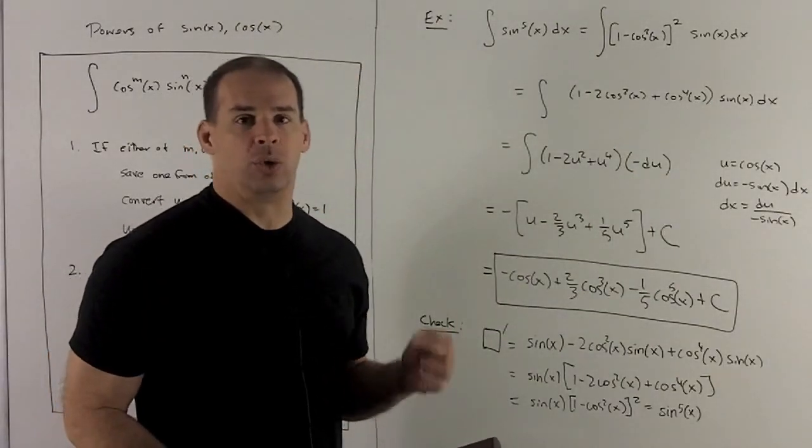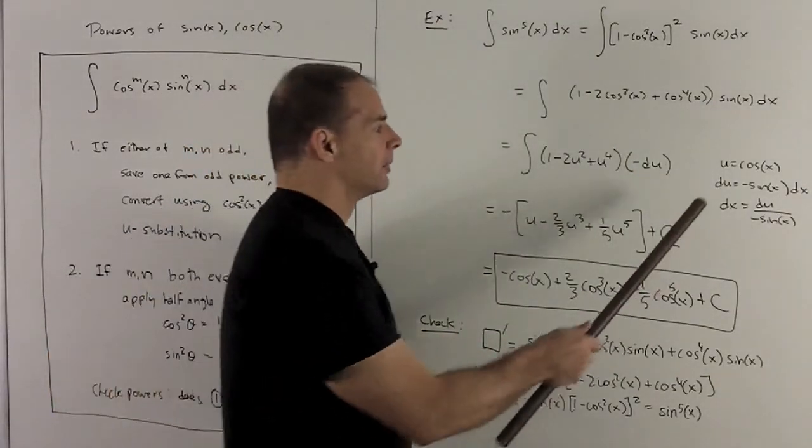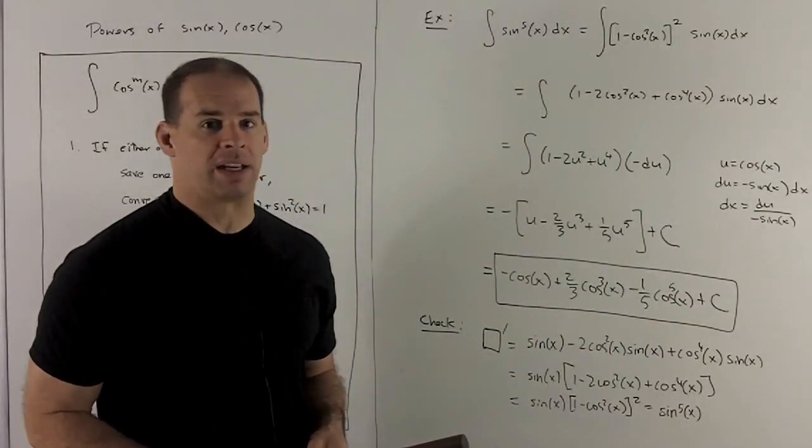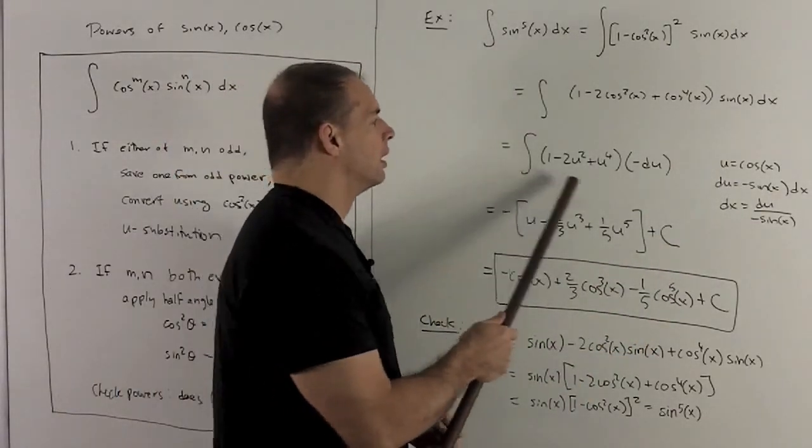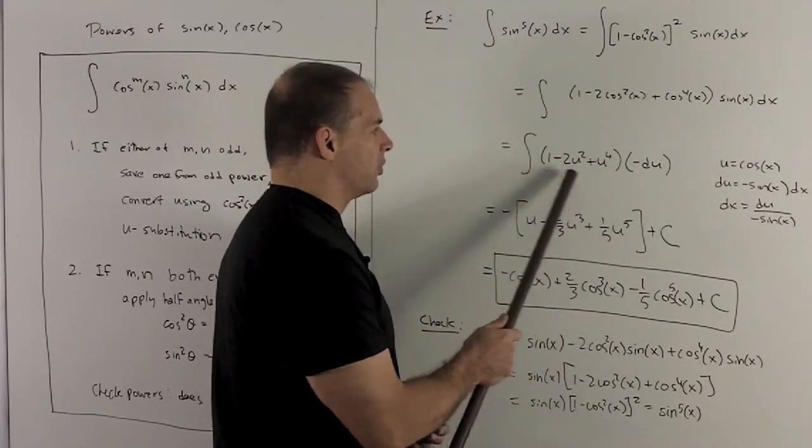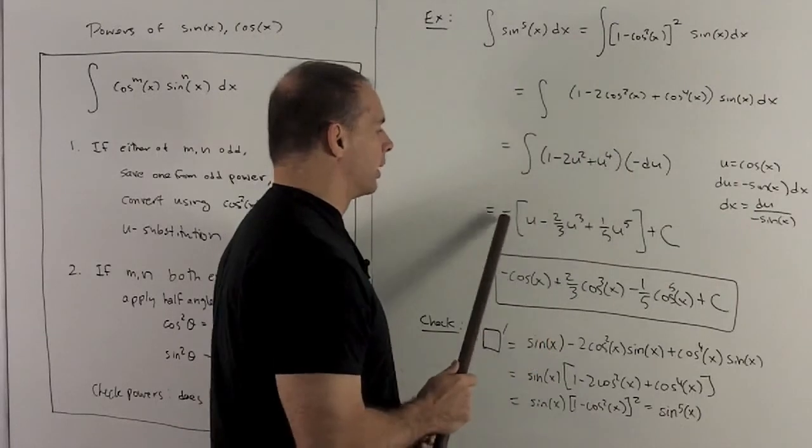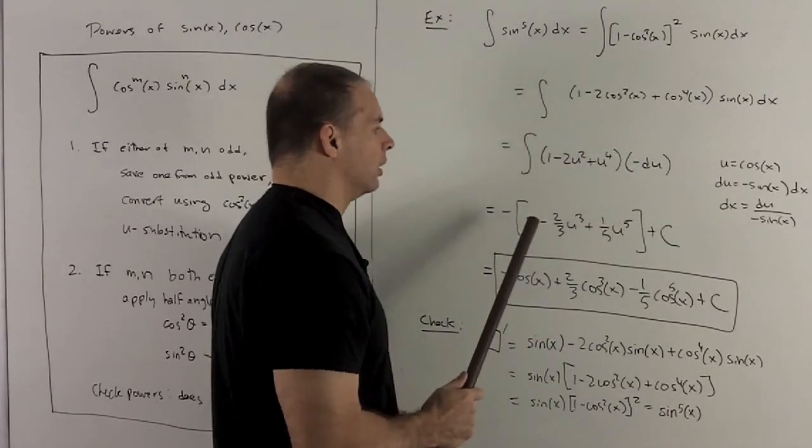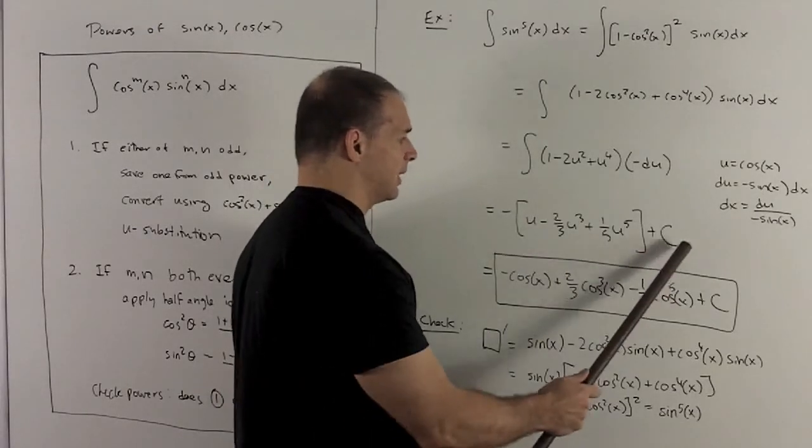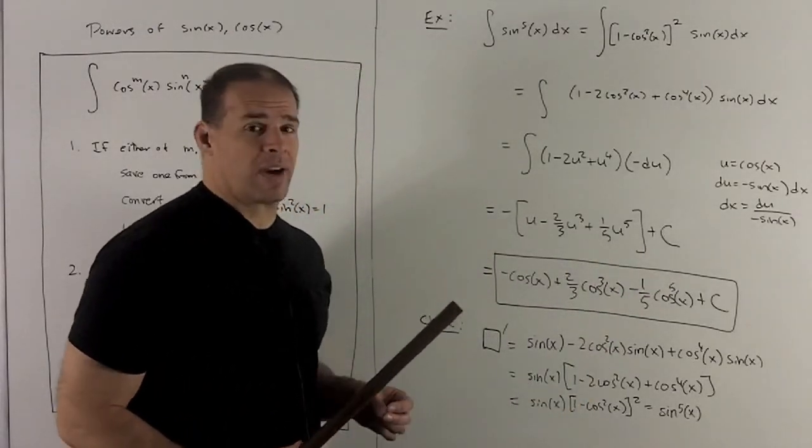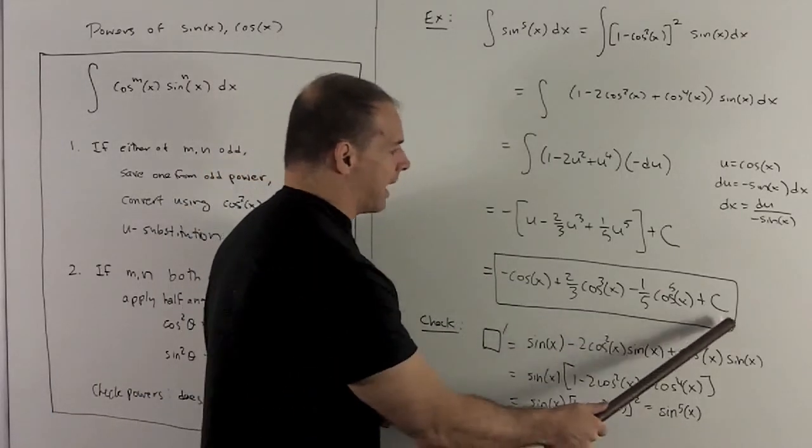So now what we want to do is let u be equal to cosine x. du is minus sine x dx, or dx equals du over minus sine x. Now I have an expression entirely in terms of u, so I can take the antiderivative of this. Minus sine I'll bring out in front. We add 1 and flip it over, and the 1 goes to a u. This gives me this. Now I just stick in cosine wherever I had a u, and that gives me my answer.